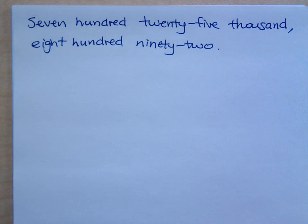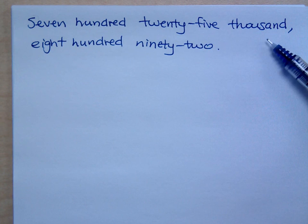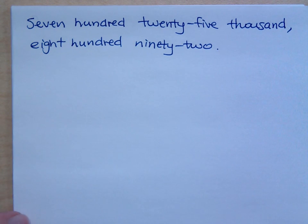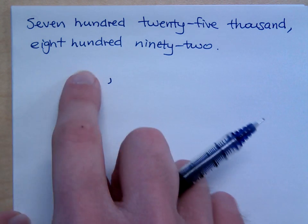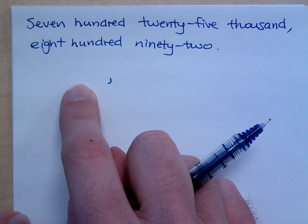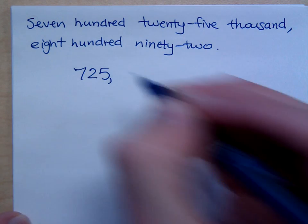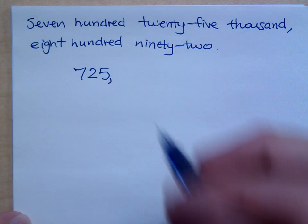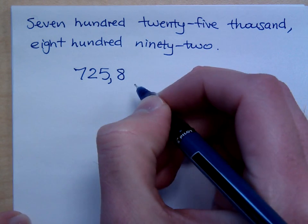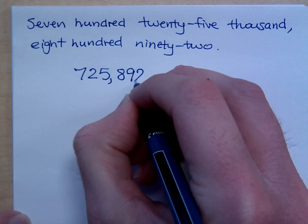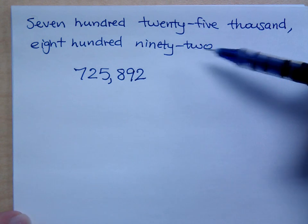Now, how many digits do you think will be in this number? Six. You see the highest we go out is thousands, and you see we have 100,000, so that's going to be six digits. All right, so here's my comma. So in the thousands spot, what do we have? 725. We have 725, and in the ones spot, or the last part, we have 892. Technically we would say 892, just like we have it written.